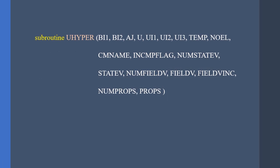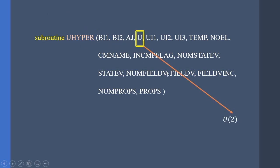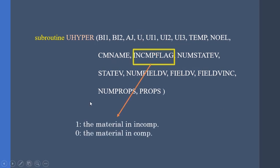So let's get to the U-Hyper subroutine. It is mostly used when we want to model hyper-elastic materials and we want to avoid having a U-mat. In this subroutine, Abaqus only gets the strain energy density functions in the form of Ī₁, Ī₂, and J. U1 and U2 means that U1 is the strain energy density function and U2 is the deviatoric part of it, which is mostly used when we want to model the Mullins effect. Also, we have a flag which is a determinant of the incompressible or compressible materials.